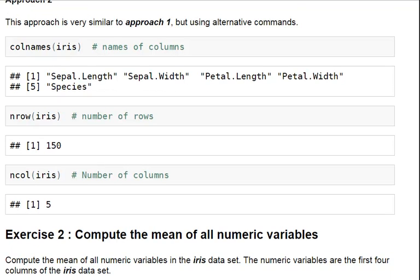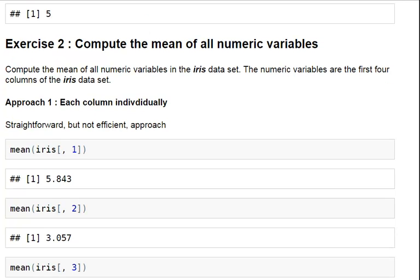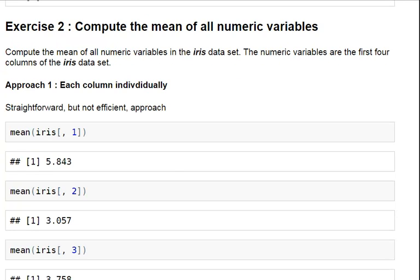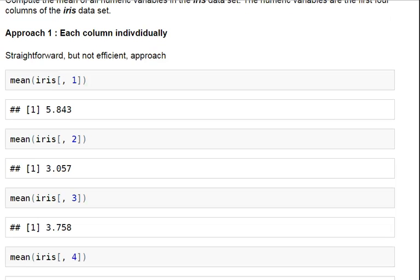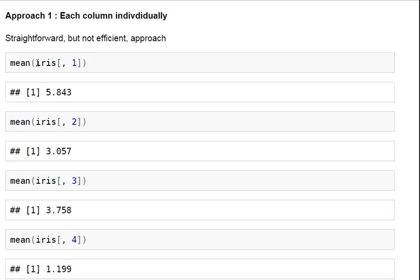Now, let's move on here. So, we've got a little exercise ahead of us. Exercise 2, compute the mean of all of the numeric variables. And so, the numeric variables are the first four columns of the IRIS data set. What we could do there is Approach 1, each column individually, calculate the mean. So, we could, first off, specify the first column. That's how you specify the first column of IRIS.